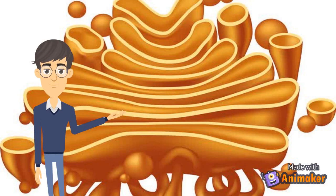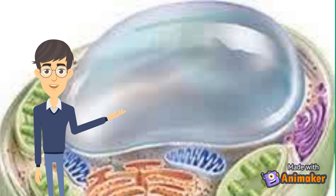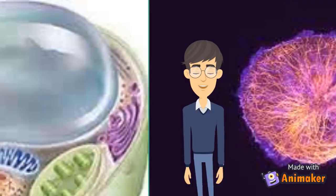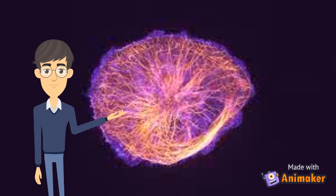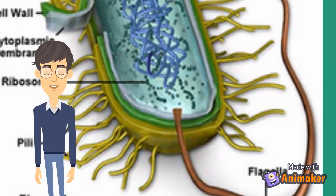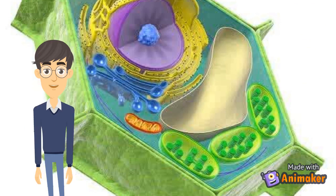The Golgi bodies act as the packaging center of the cell. The lysosomes act as the cleanup crews of the cell. The vacuole acts as the storage tank in the cell. The cytoskeleton acts as the framework of the cell. The cilia and flagella act as the mobility mechanism in the animal cell. In all, cell biology revolves around the concept of the cell as the fundamental unit of life.